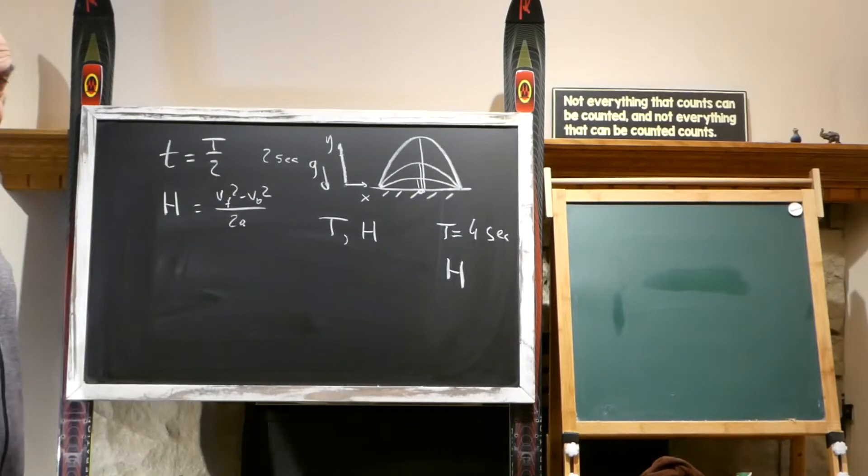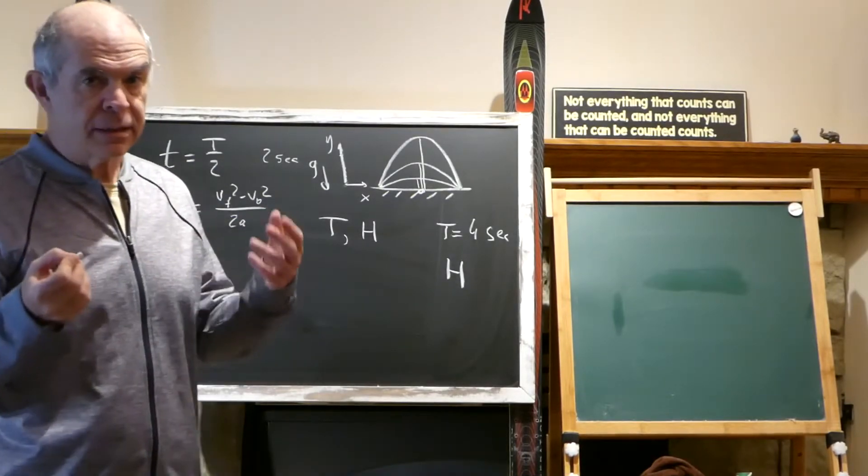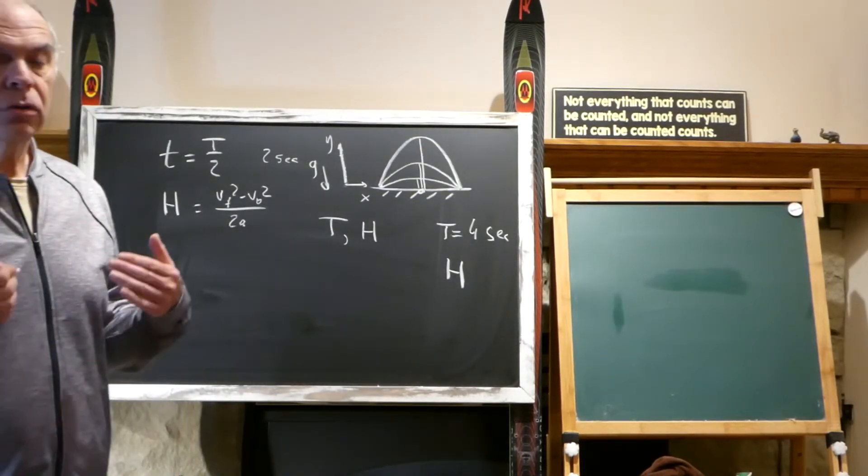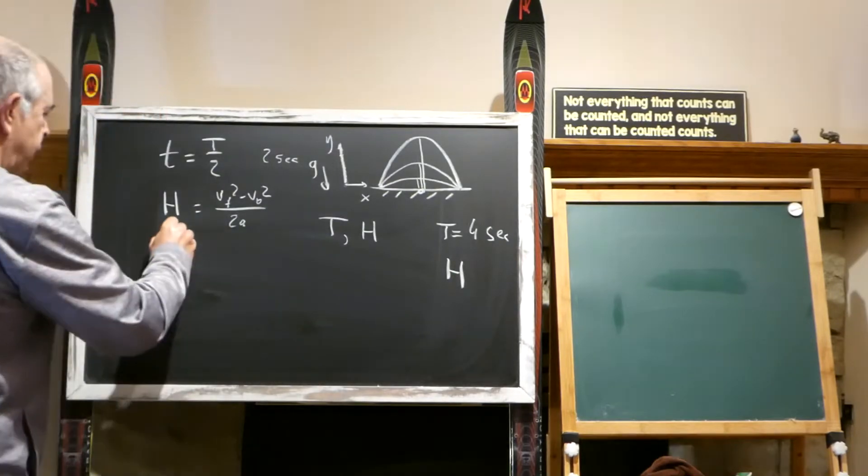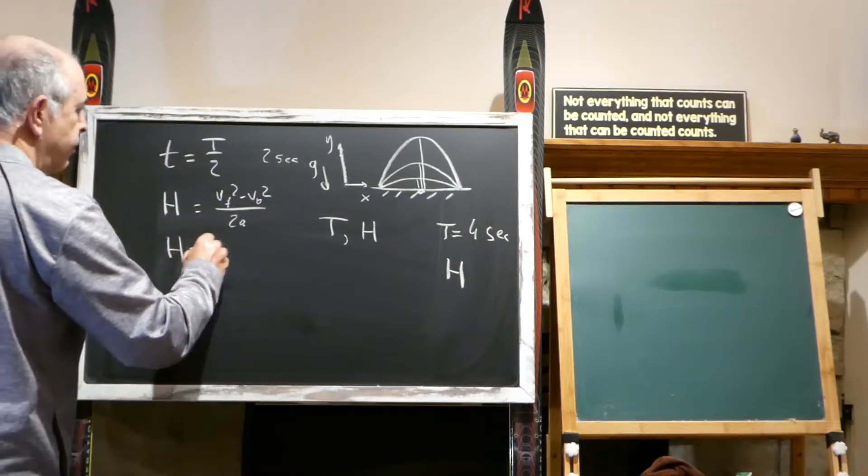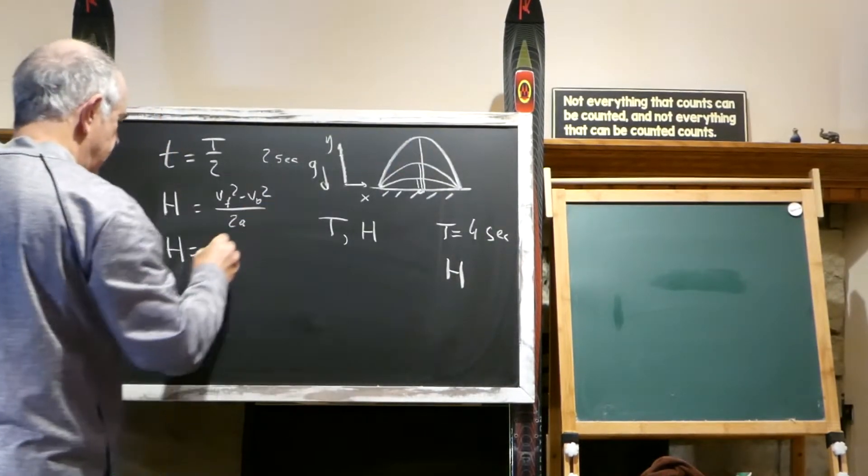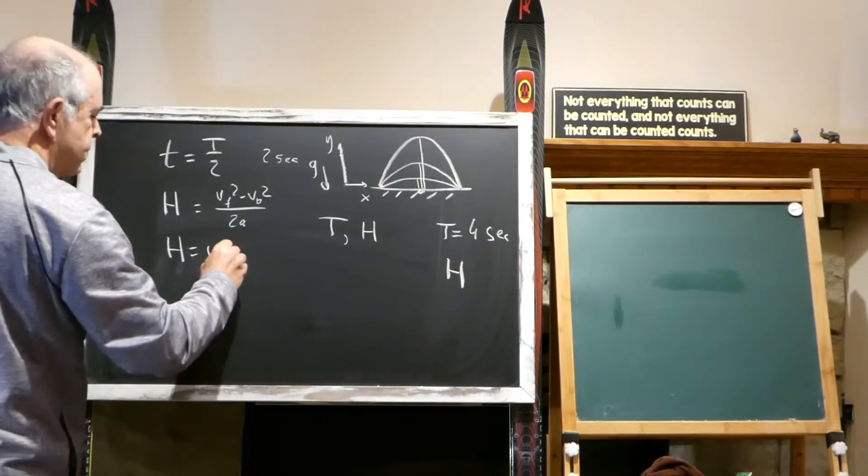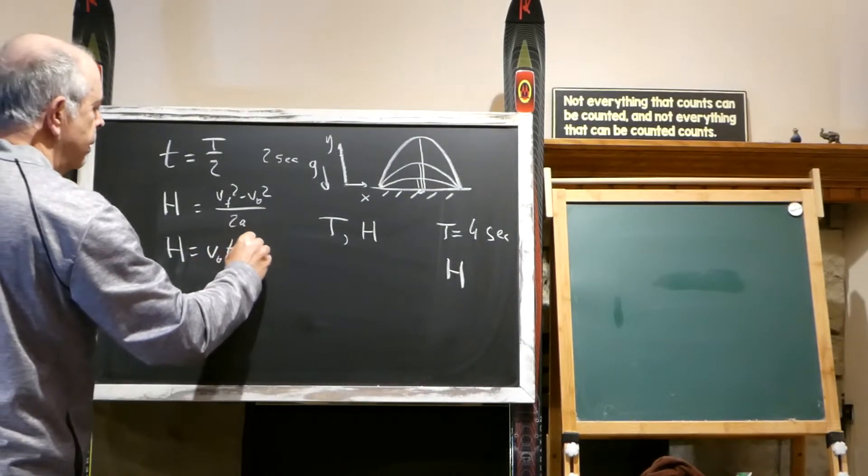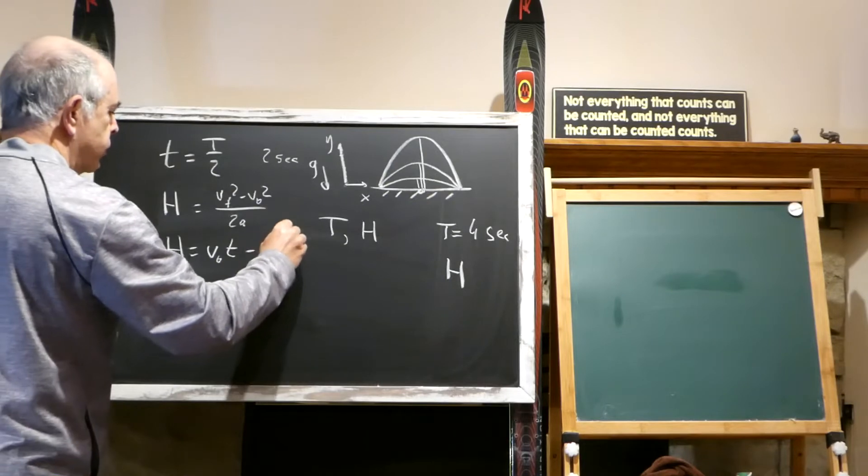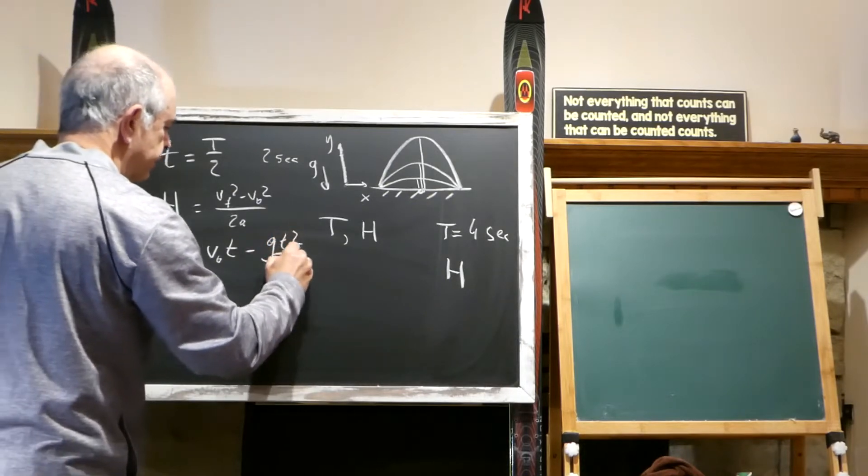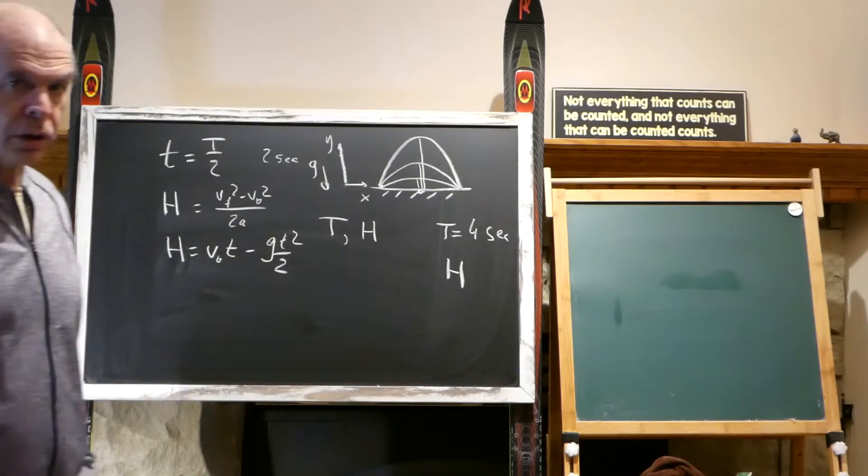And the second formula we can use for the distance height - we can use the formula: distance from here to here is initial speed times time minus G T squared over 2. We can use this formula for sure.